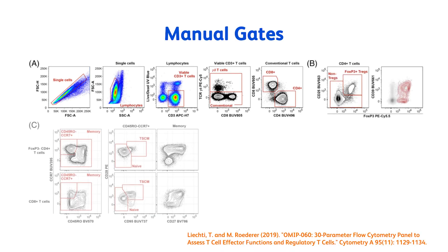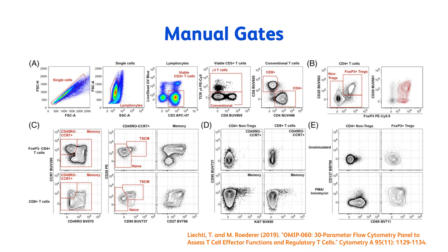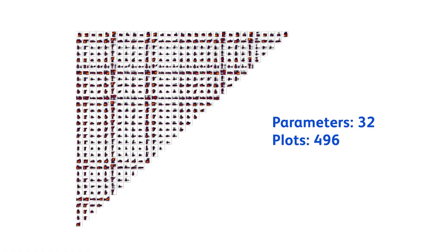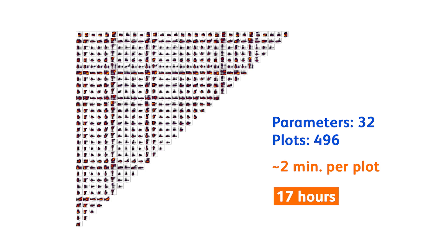Manual gates are essential, and they are not going anywhere with high-parameter analysis. They did a manual gate analysis on a 30-parameter panel, and there's nothing wrong with that. But manual gates can be elusive. A 32-color experiment has 496 n-by-n plots. Assuming it takes about 2 minutes per plot to draw your gate, it will take about 17 hours just to set up your gate hierarchy. It is simply impossible to look at all n-by-n plot combinations.